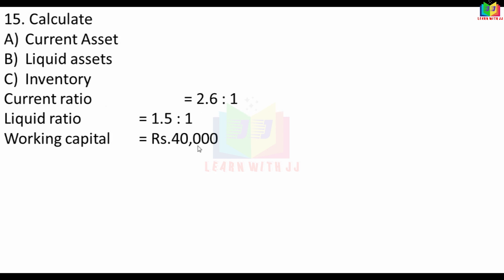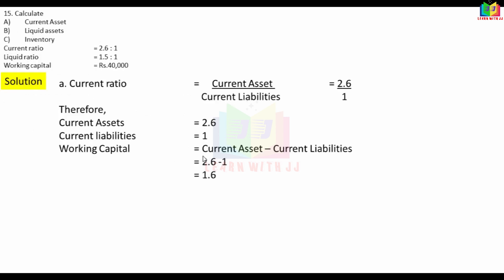Now this is the clue. Working capital is 40,000. Current assets minus current liabilities is working capital. This is 2.6 minus 1 = 1.6. The value of 1.6 is 40,000. So current asset is 2.6 and current liability is 1. Working capital is 1.6, and 1.6 value is 40,000.